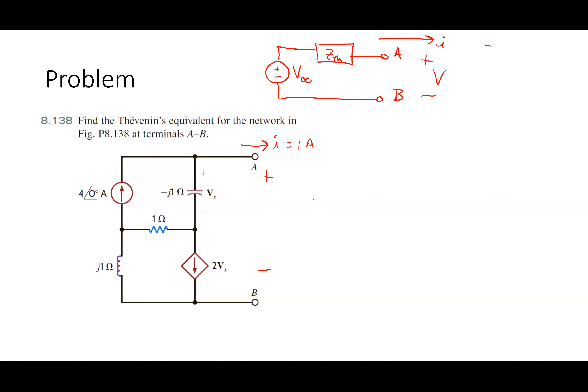The Norton equivalent is a current source in parallel with a resistor. To say two circuits are equivalent means that from the perspective of their terminals, if I have the same current flowing out, there will be the same voltage across them. We have to set them up to be that way.